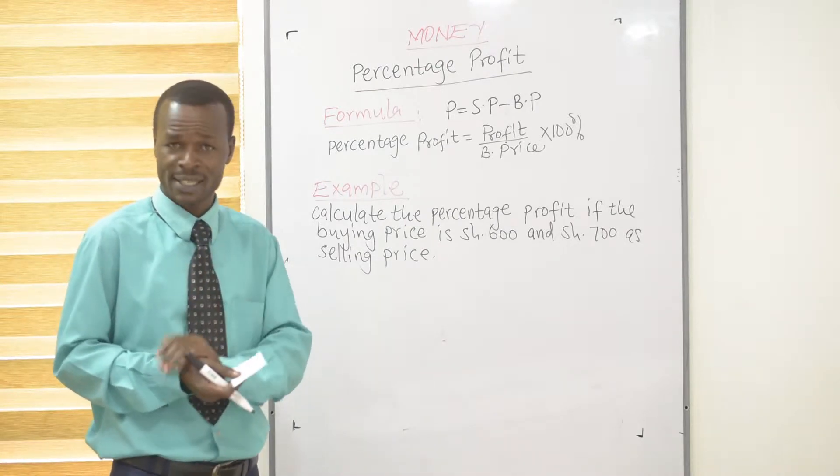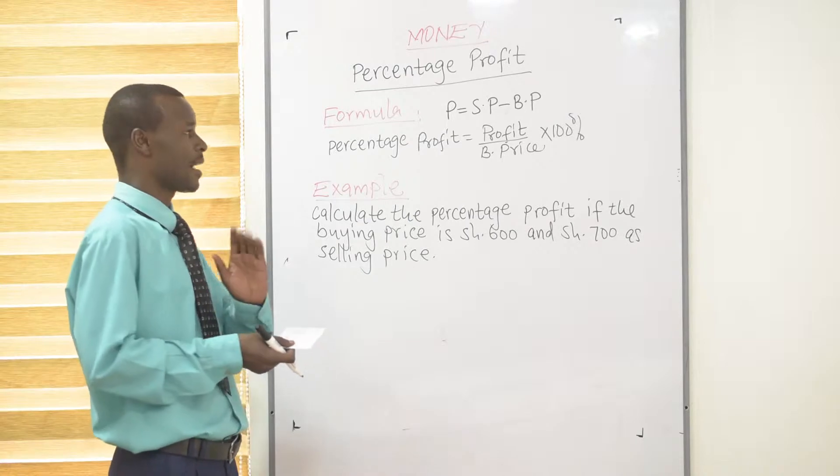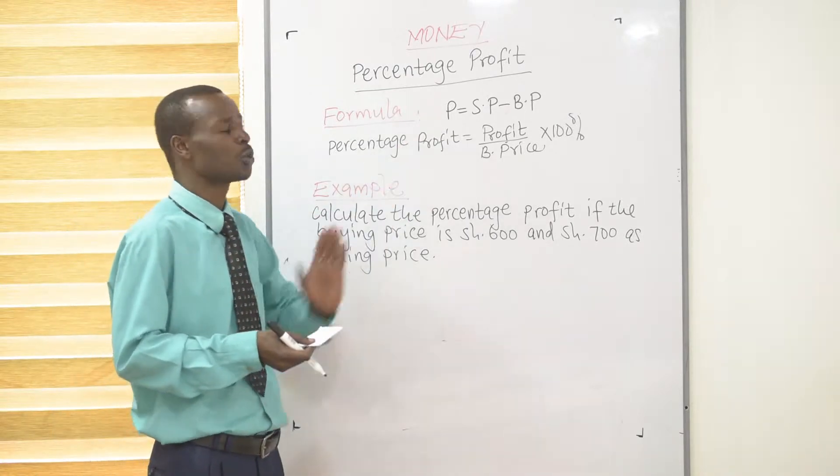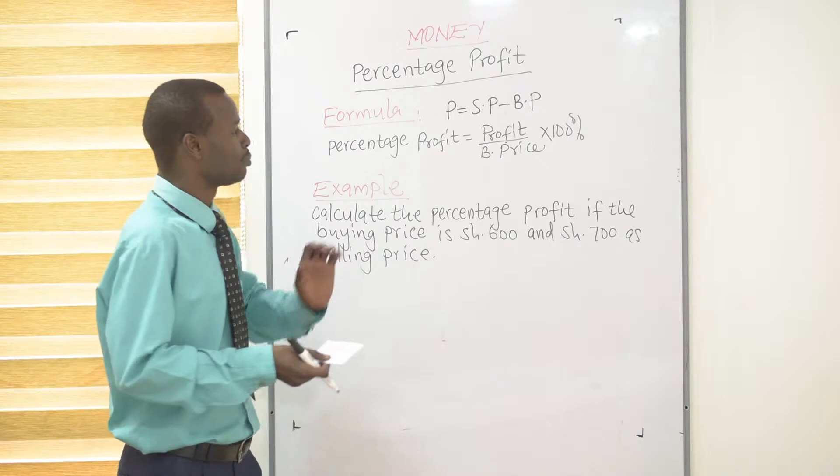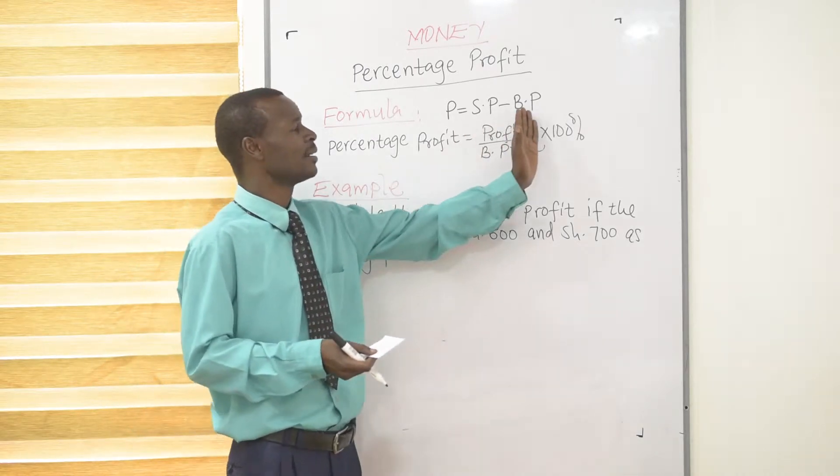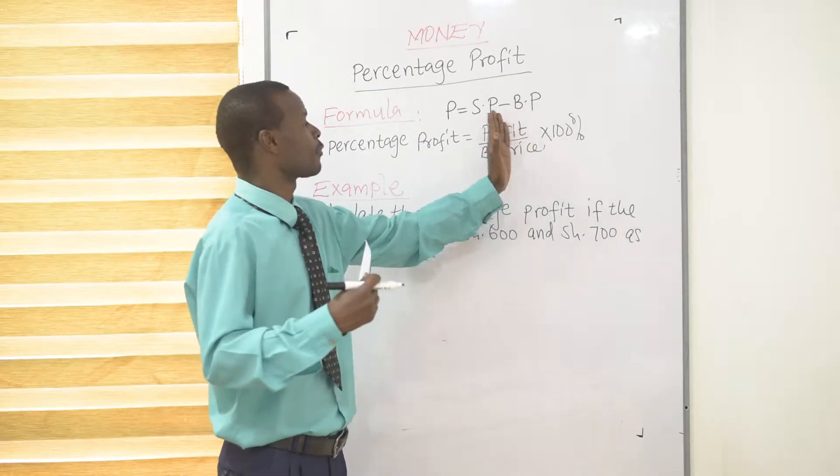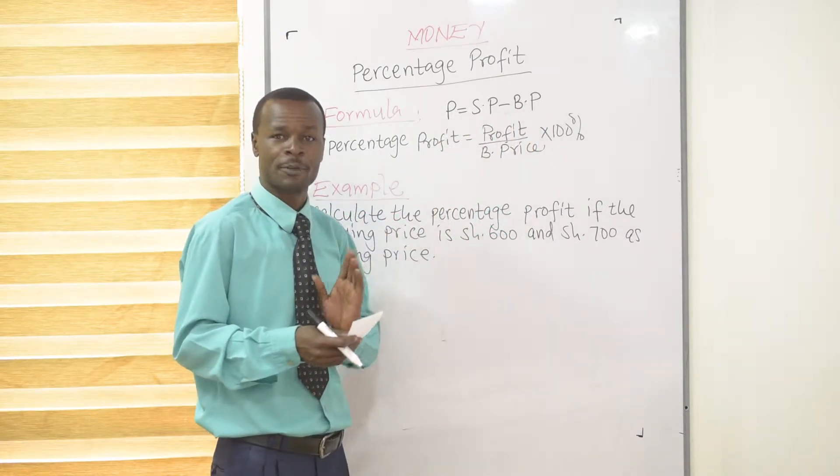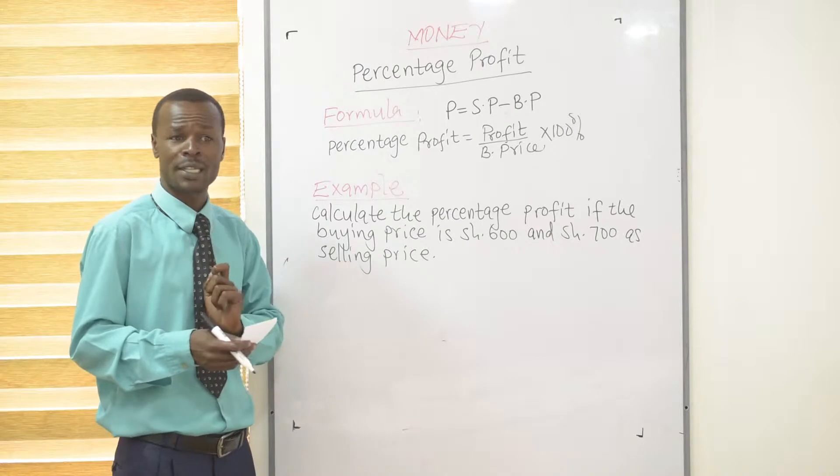To get percentage profit, first we need to know how to get the profit. Profit is obtained by subtracting the buying price from the selling price. You'll get your profit.